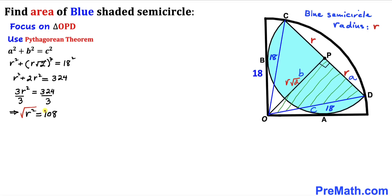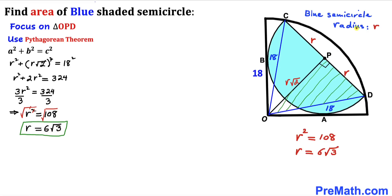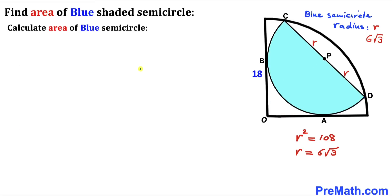Taking the square root on both sides, R = √108. Simplifying √108 gives 6√3. So the radius R of the blue semicircle turns out to be 6√3 units.